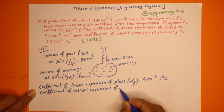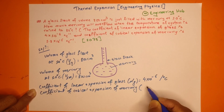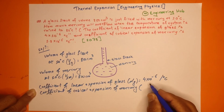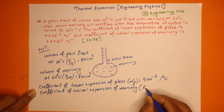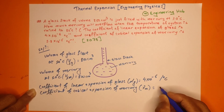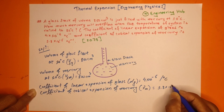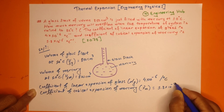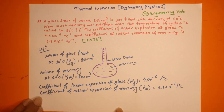For mercury, the cubic expansion coefficient gamma m is 1.8 into 10 to the power minus 4 per degree Celsius. This is the cubic expansion of mercury.